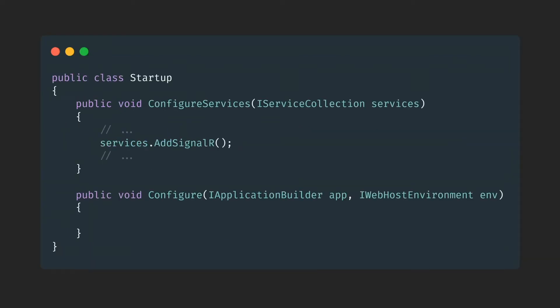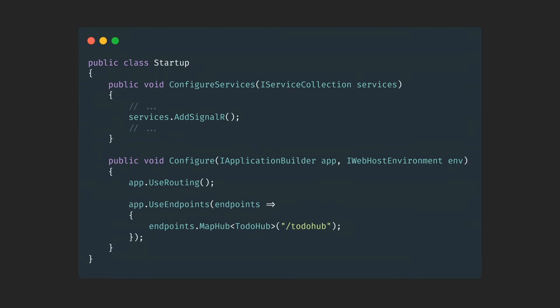Then there's a Configure method — which you get from the scaffolding if you do dotnet new webapi with the .NET CLI. In this Configure method, we have to enable SignalR as well. You use routing, and after that you say app.UseEndpoints. On those endpoints, we register an endpoint called /todo-hub, and we map that endpoint to the class TodoHub.